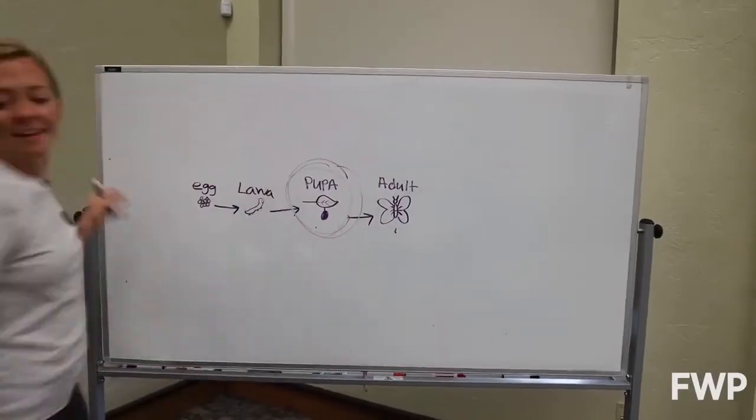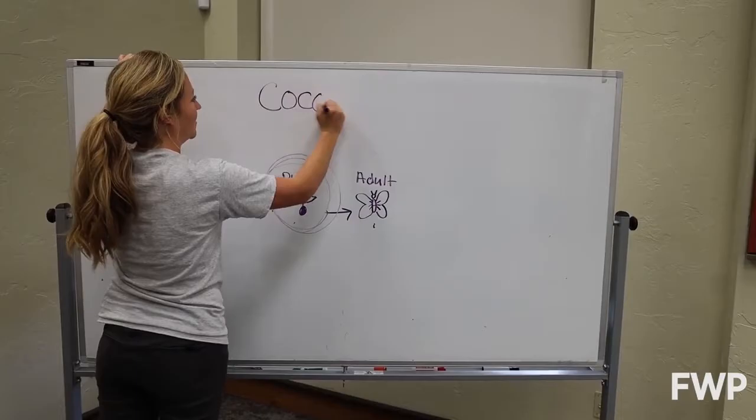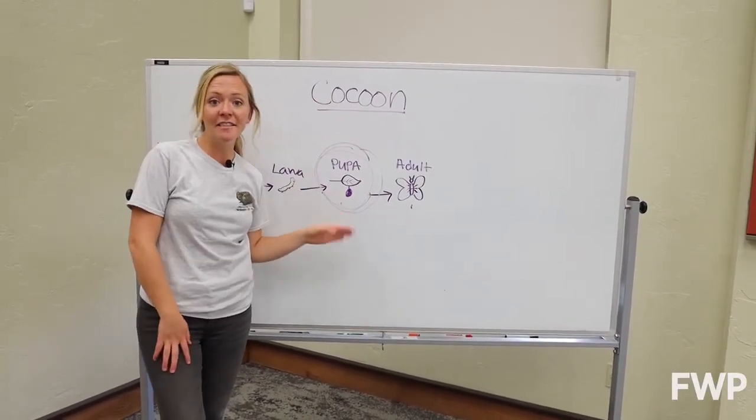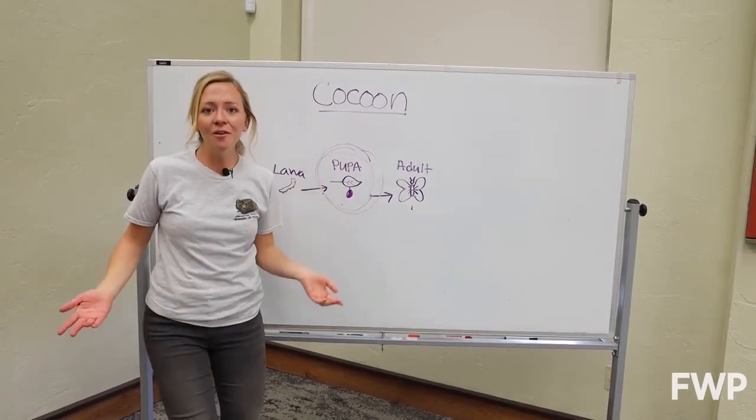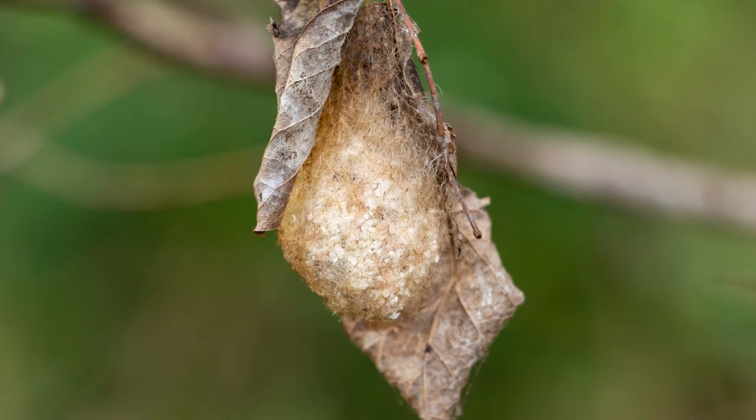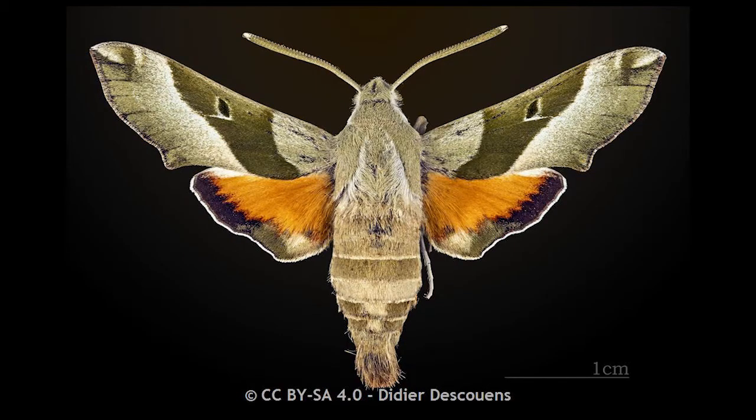And last but not least what is a cocoon? A lot of people mistakenly call a butterfly chrysalis a cocoon. A cocoon is actually a silk covering that a lot of insects weave to protect their pupa when it's in this vulnerable state. So insects like moths will weave a cocoon.